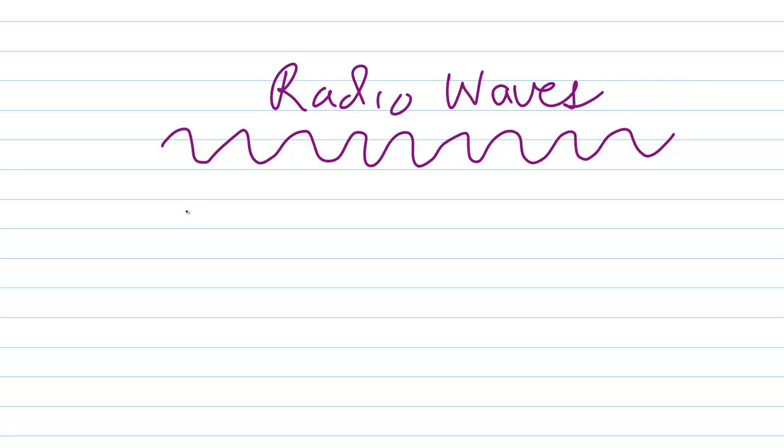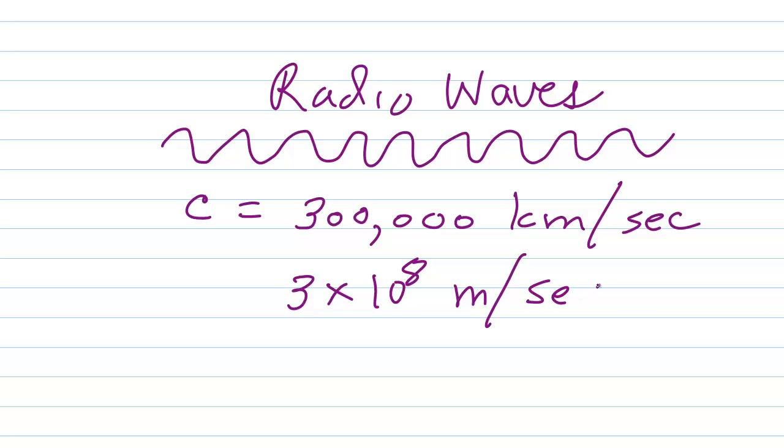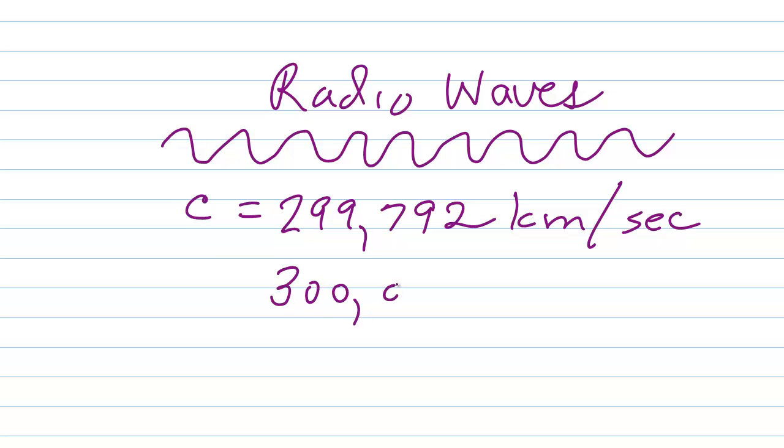Now normally in space, in free space, meaning air or a vacuum, particularly in the vacuum of outer space, radio waves and all electromagnetic waves will travel at the so-called speed of light C, which is about 300,000 kilometers per second or 3 times 10 to the 8th meters per second. You may also remember that as 186,000 miles an hour. Actually, I think a much more accurate figure for this is about 299,792. But for all intents and purposes, in our calculations, we can call it 300,000 kilometers per second.